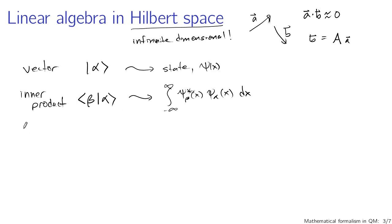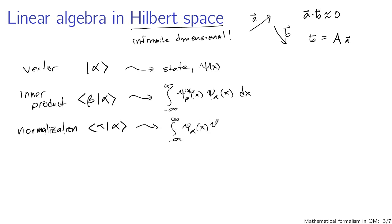With this notion of an inner product, we can think about normalization. The inner product of vector alpha with itself translates to the integral from minus infinity to infinity of psi-alpha-star of x times psi-alpha of x dx. For normalization, this had better equal one. So the inner product of a vector in Hilbert space with itself must give you one for it to represent a valid quantum mechanical state — just as the wave function's squared modulus must integrate to one.